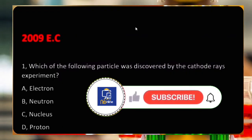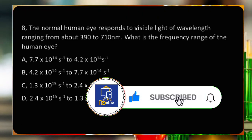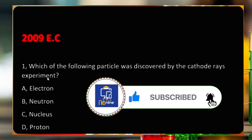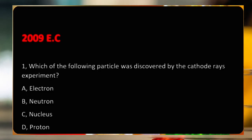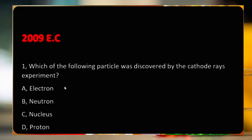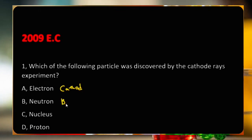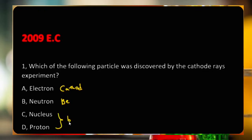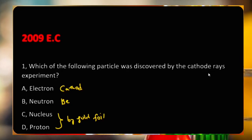Grade 11 question: Which of the following particles was discovered by the cathode ray experiment? A) electron, B) neutron, C) nucleus, D) proton. The answer is electron — discovered by the cathode ray experiment. Neutron was discovered by bombarding beryllium atoms with alpha particles, and nucleus and proton were discovered by the gold foil experiment.